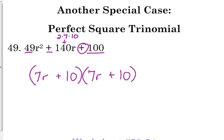Now, it's most likely if you see this as a multiple choice answer on a test, because those are the exact same expression, we can write it like this: 7r plus 10 squared.